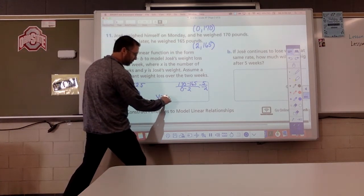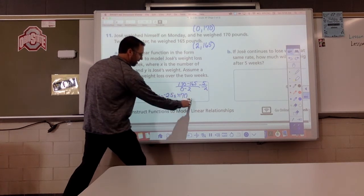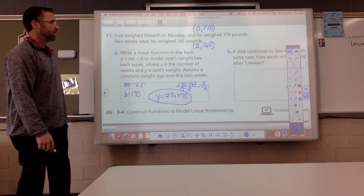Equation form. Y equals negative two and a half X plus 170. Bam. Nice job, Mr. Noel. Thank you.